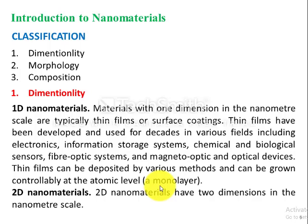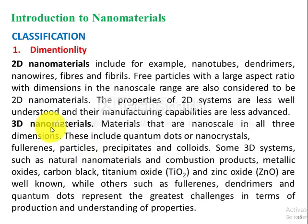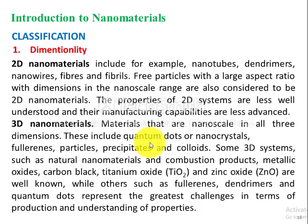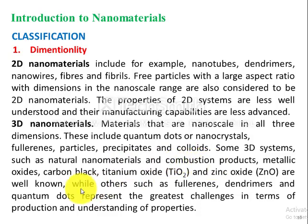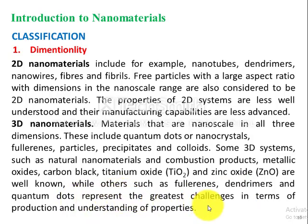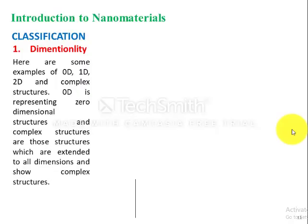Two-dimensional nanomaterials have two dimensions in the nanometer scale — they are nanoscale in size along the x–y or x–z axis. Three-dimensional nanomaterials are nanoscale in all three dimensions. These include quantum dots, nanocrystals, fullerenes, particles, and colloids. Some 3D systems such as metallic oxides — carbon black, titanium oxide, zinc oxide — are well known. Others such as fullerenes, dendrimers, and quantum dots represent the greatest challenge in terms of production and understanding of properties.